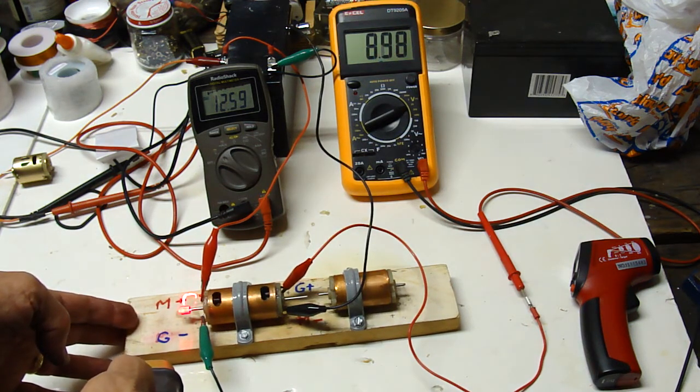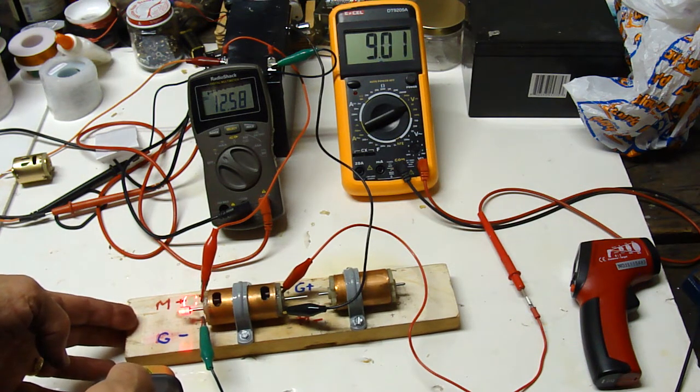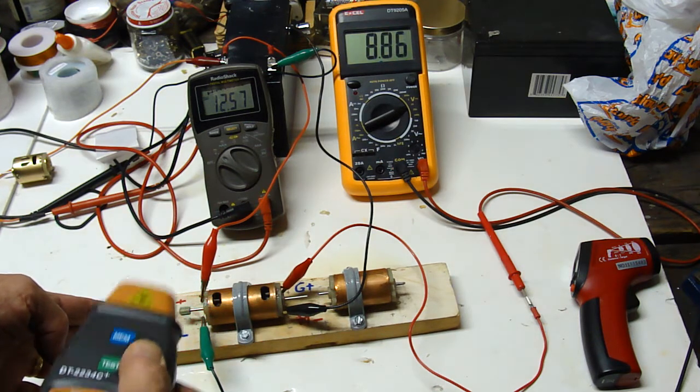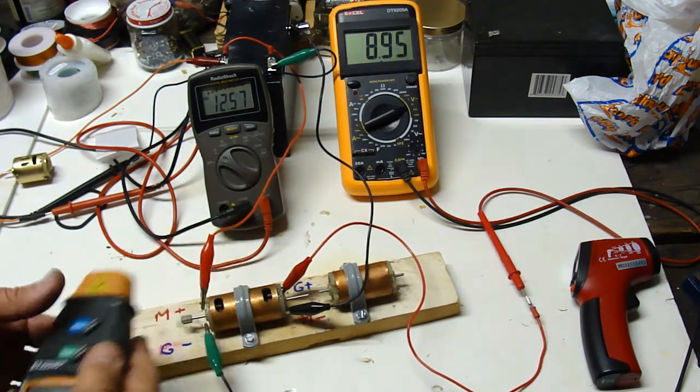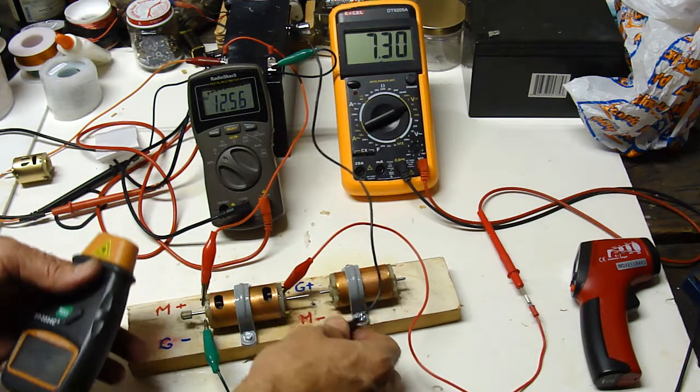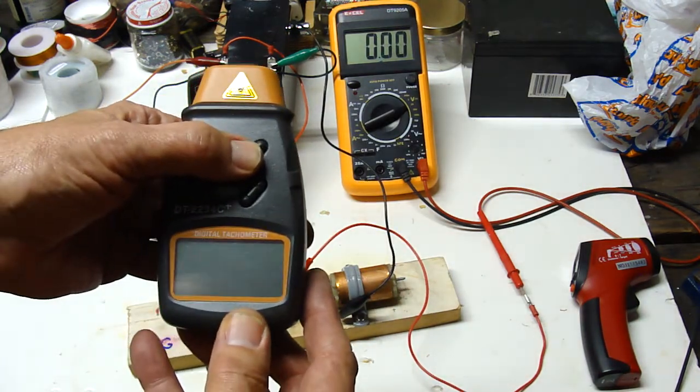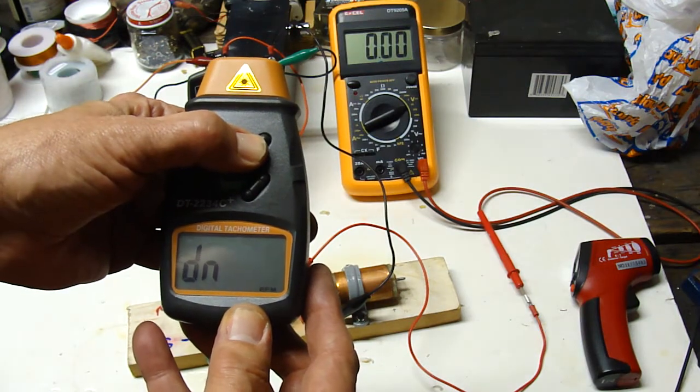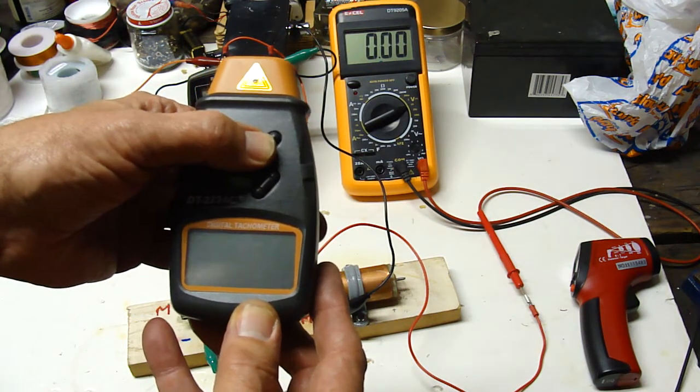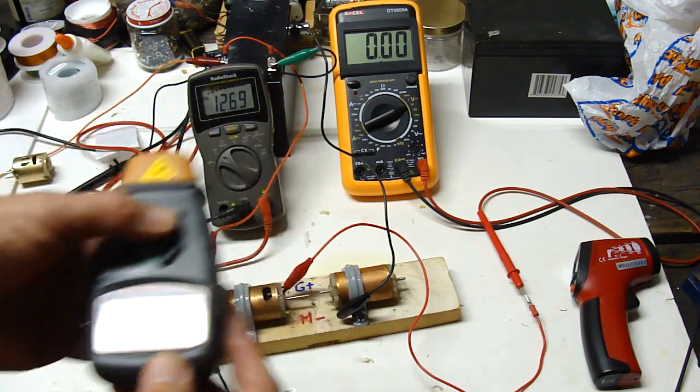Moving right along. This is 32 gauge wire like the original system also. And we go to 18.8, 16.5 on the low, 18.7 last.